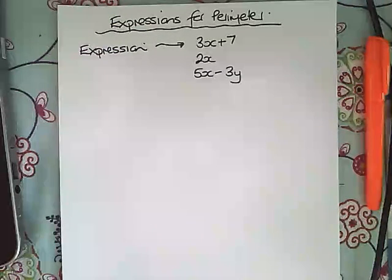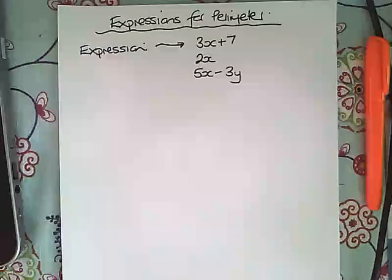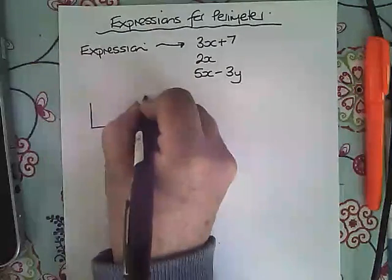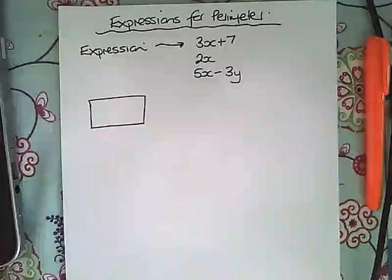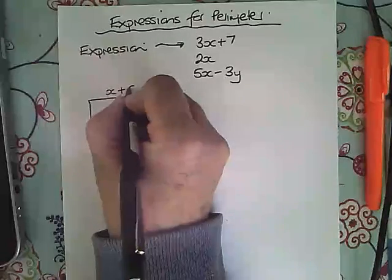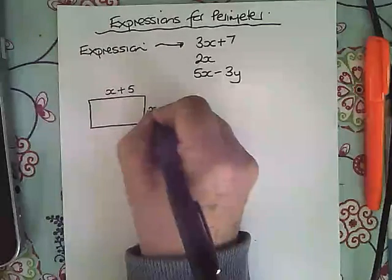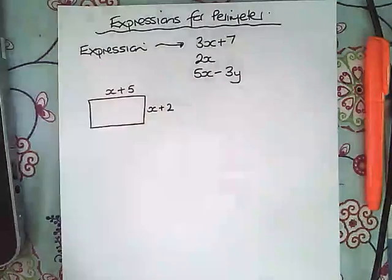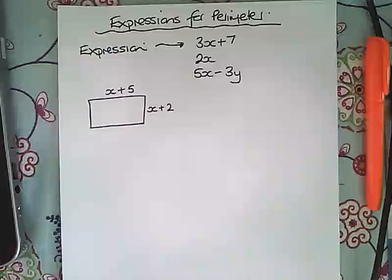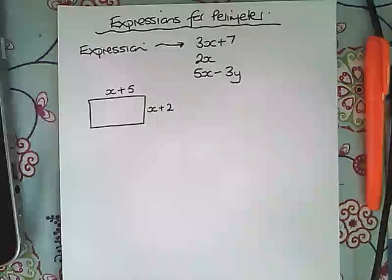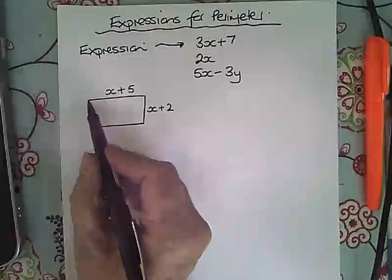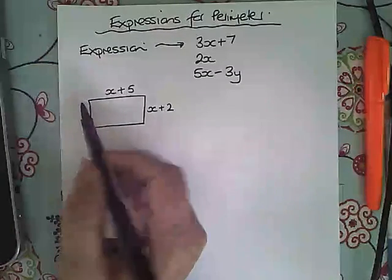Let's start off with something straightforward which is a rectangle. If we are given a rectangle and told that this side length is x plus 5 and this side length is x plus 2, we are asked to write down an expression for the perimeter of the shape. Now the first thing we need to remember is what perimeter means, which is the distance around the outside of the shape.